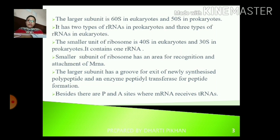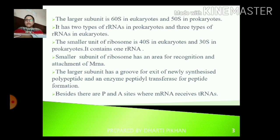The smaller subunit contains one rRNA, and it has an area for recognition and attachment of mRNA. The larger subunit has a groove for exit of the newly synthesized polypeptide — whatever new polypeptide is formed will exit through that groove — and it also has an enzyme called peptidyl transferase for peptide bond formation. Besides these, there are P and A sites, also known as donor and acceptor sites, where the ribosome receives a tRNA.